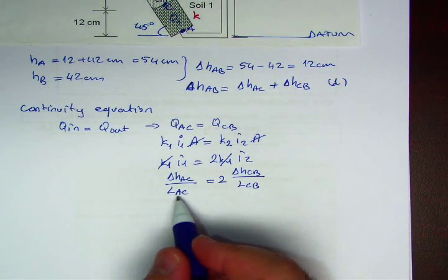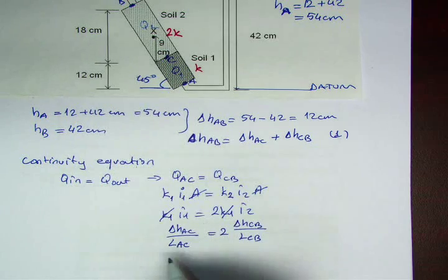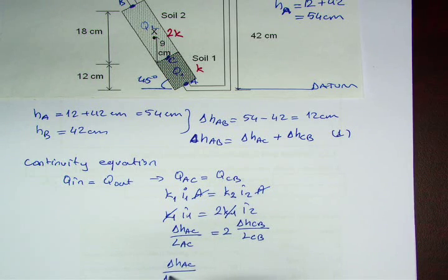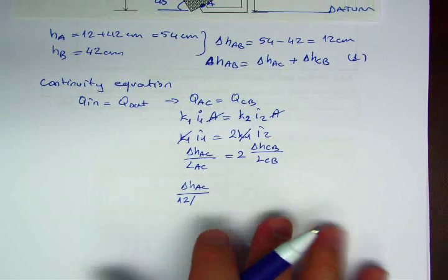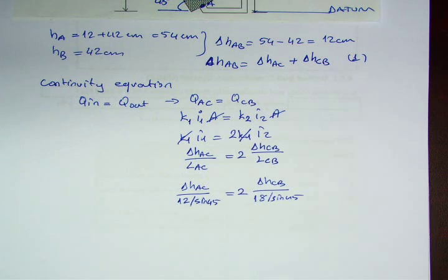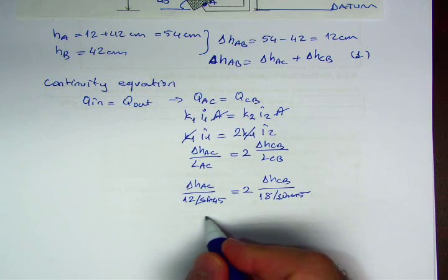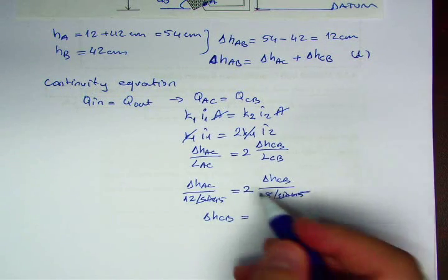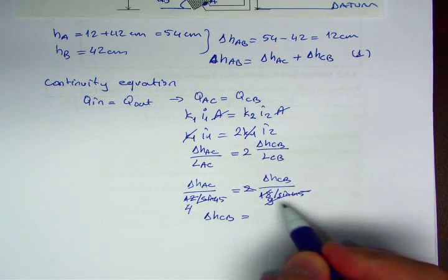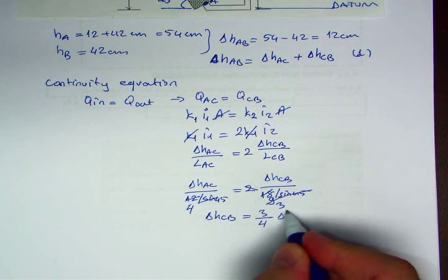Now LAC is 12 divided by sine 45. So Delta HAC divided by 12 divided by sine 45, that's equal to 2 Delta HCB divided by 8. The sine 45s will cancel out. As a result, Delta HCB becomes 3 divided by 4 Delta HAC.